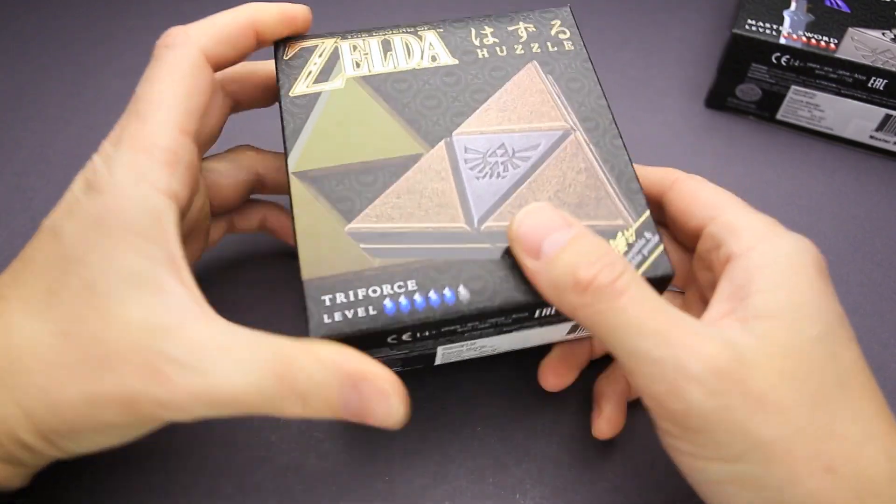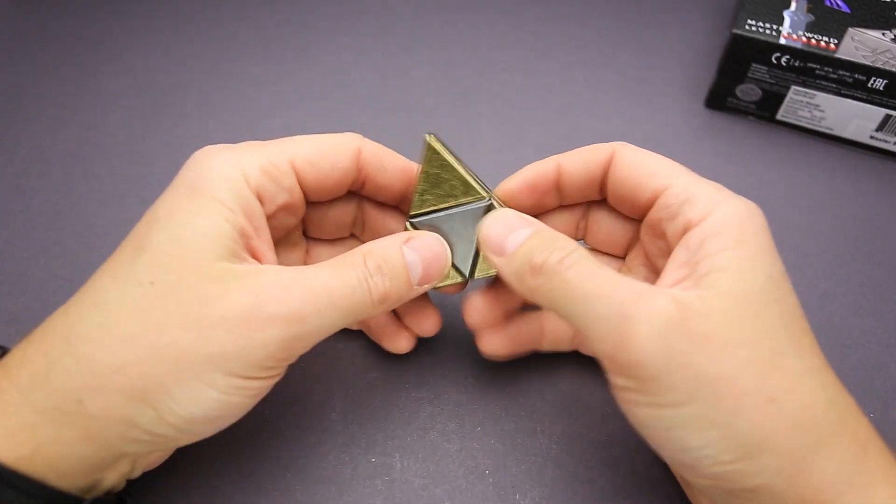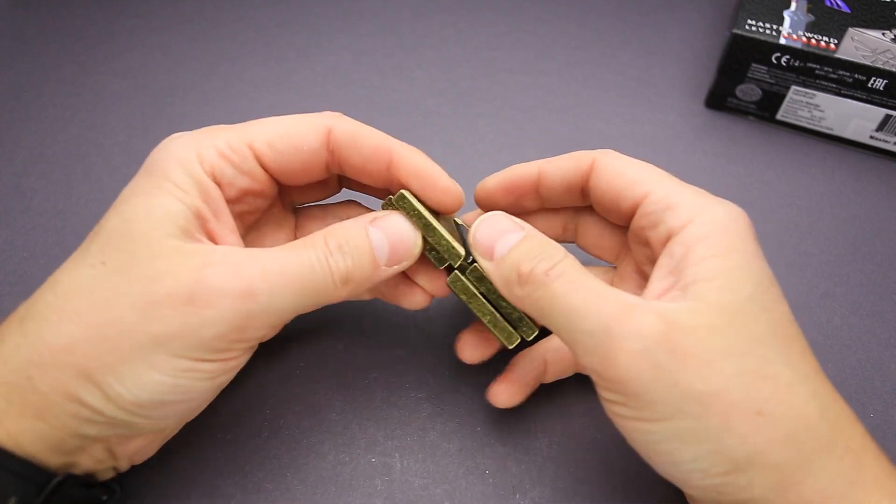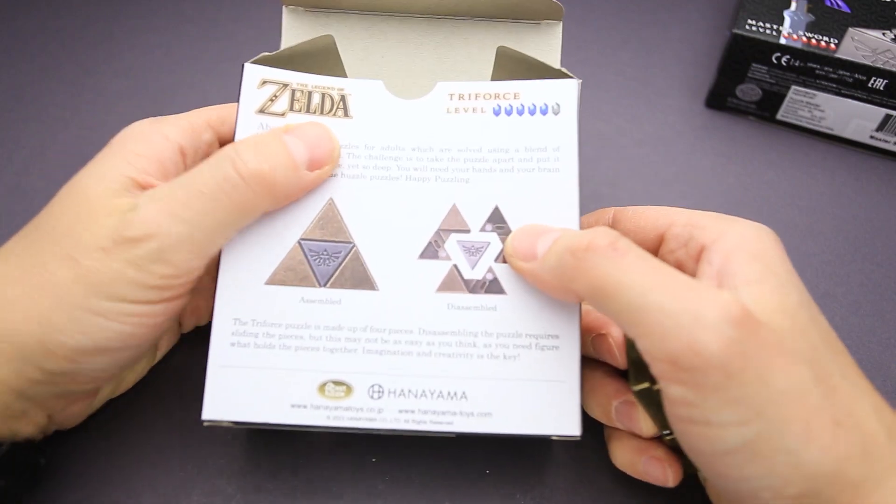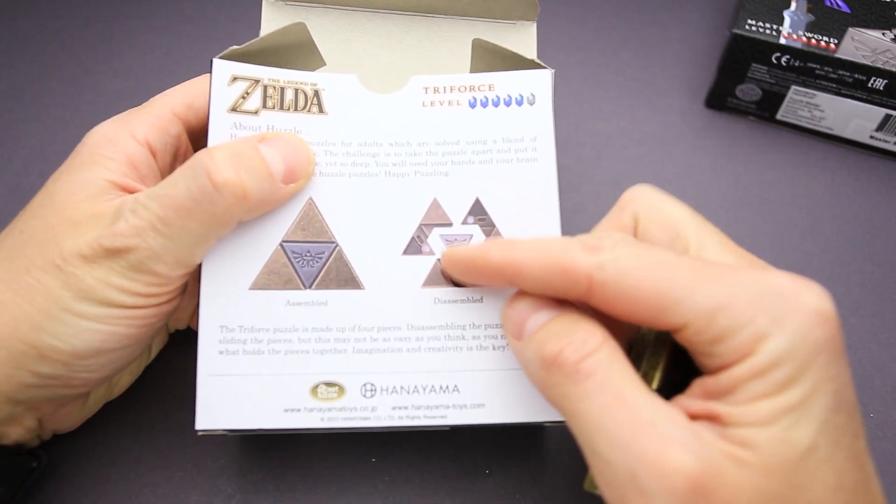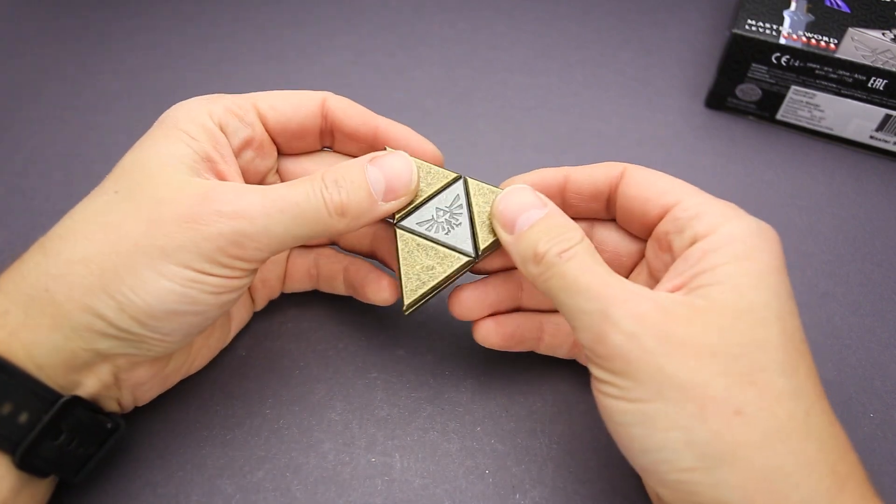The next one is Triforce. It has three parts and the goal of the puzzle is to take it apart. Actually, I think that it has more than three parts. It has four parts. There is a triangle inside and three exactly the same parts. So let's see how to take it apart.